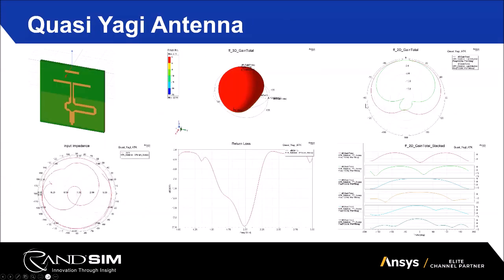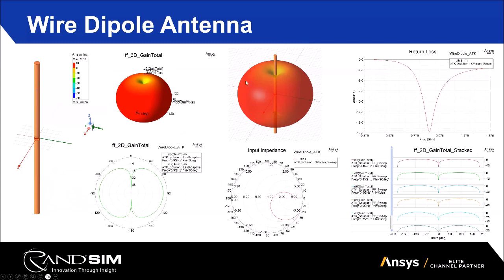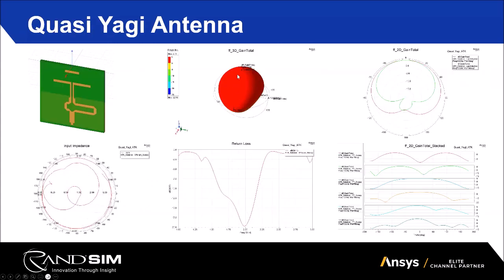Here's another example from the toolkit — a quasi-Yagi antenna. Unlike the dipole which is more omnidirectional around the wire, this one is more directional, with gain focused up through the Z-axis. This is confirmed in the far-field 2D pattern. We can see its return loss in the lower range of the 5G NR band. This can be specified for any frequency you want to design for, and if you're customizing your own antenna, these are the types of outputs you would see.